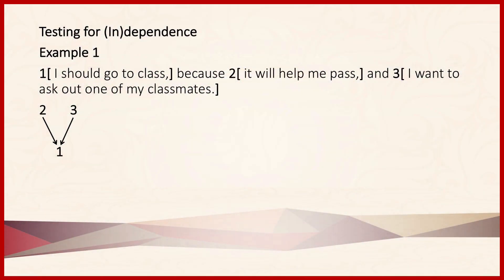Once we've bracketed and numbered our propositions, we have to determine whether the premises support the conclusion dependently or independently. Consider a simple example: 1, I should go to class, because 2, it will help me pass, and 3, I want to ask out one of my classmates. The premise indicator 'because' tells us that propositions 2 and 3 support conclusion number 1. In this example, the premises are clearly independent — they don't have anything to do with one another. If we were to remove proposition 2, it wouldn't affect the strength of the inference from 3 to 1, and vice versa.